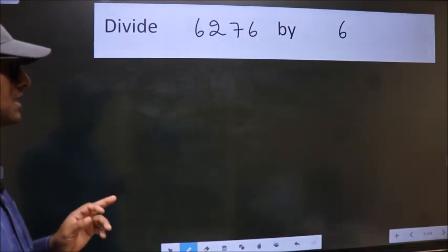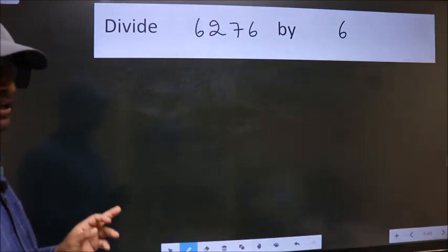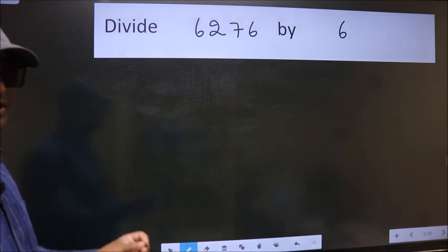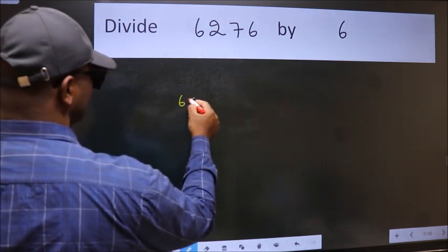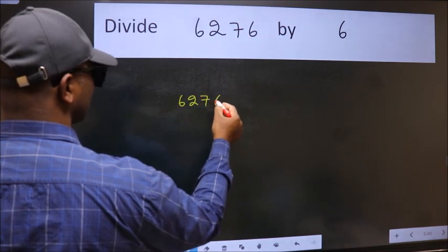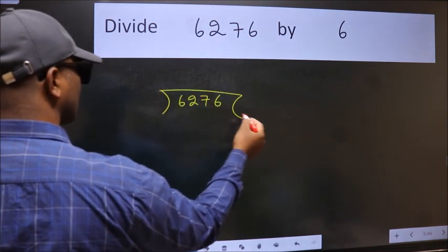Divide 6276 by 6. To do this division we should frame it in this way. 6276 here, 6 here.